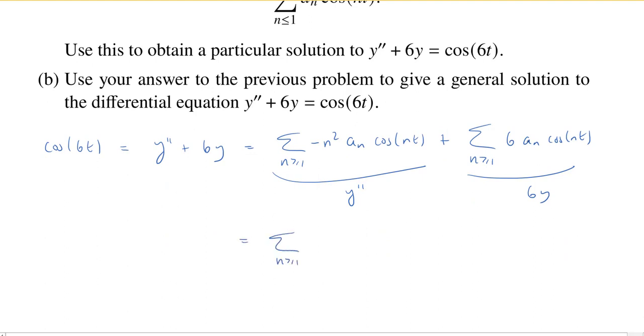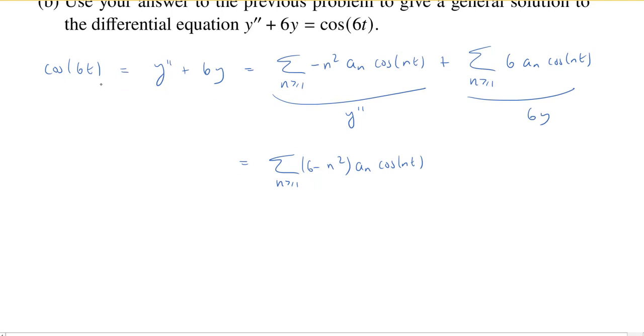So I'll sum. And let's see, they both have an a_n cos(nt), so we have a_n cos(nt). I have a 6 and a minus n², so this becomes (6 - n²). So I have a Fourier series on the left. It doesn't look much like a series, but you can think of this as being a Fourier series where all the coefficients for sine are 0, and all the coefficients for cosine are 0, except when n is equal to 6, in which case the coefficient is 1. So I have two Fourier series equal to each other. We have a uniqueness theorem, so by our uniqueness of Fourier series theorem, we know that the coefficients all have to be the same.